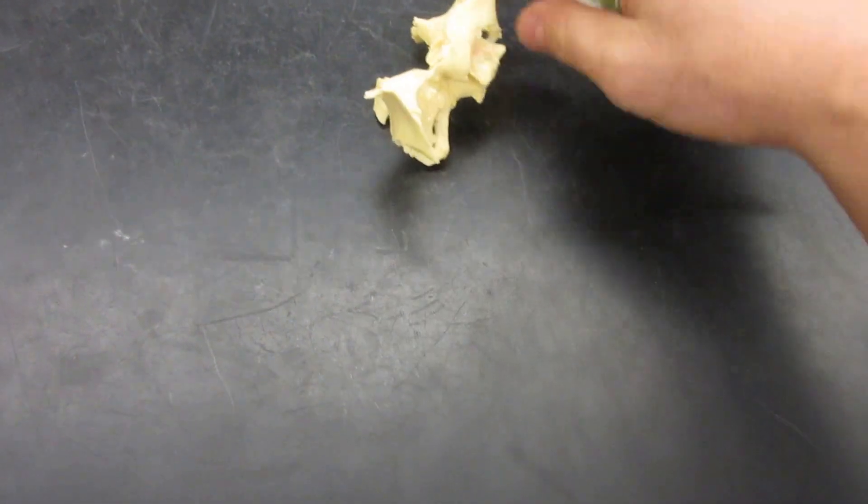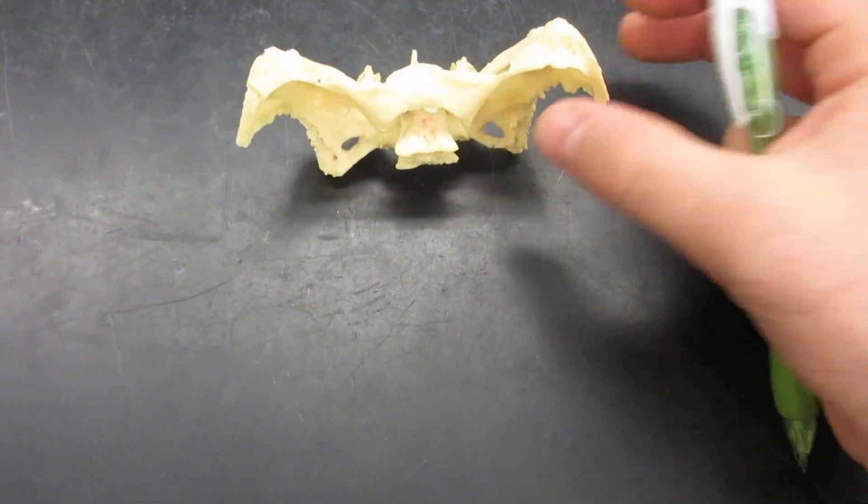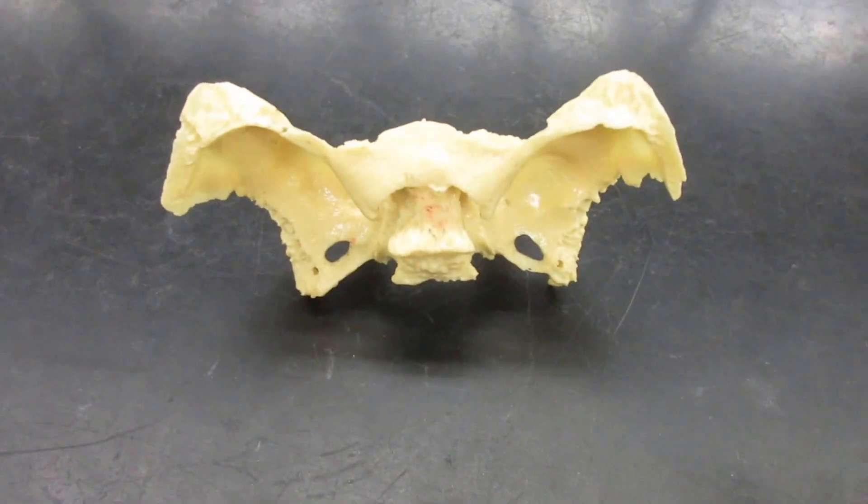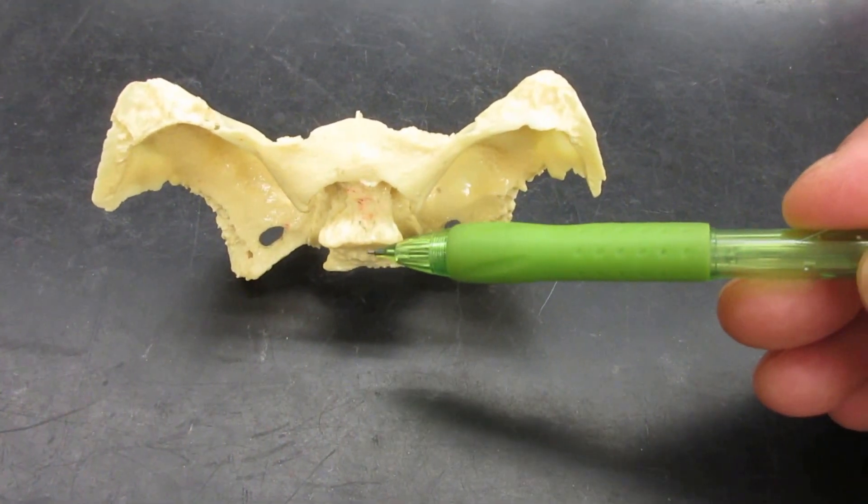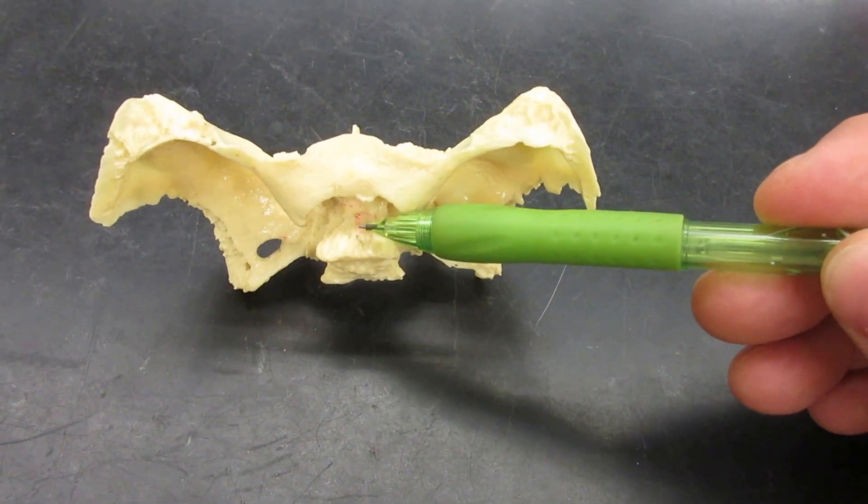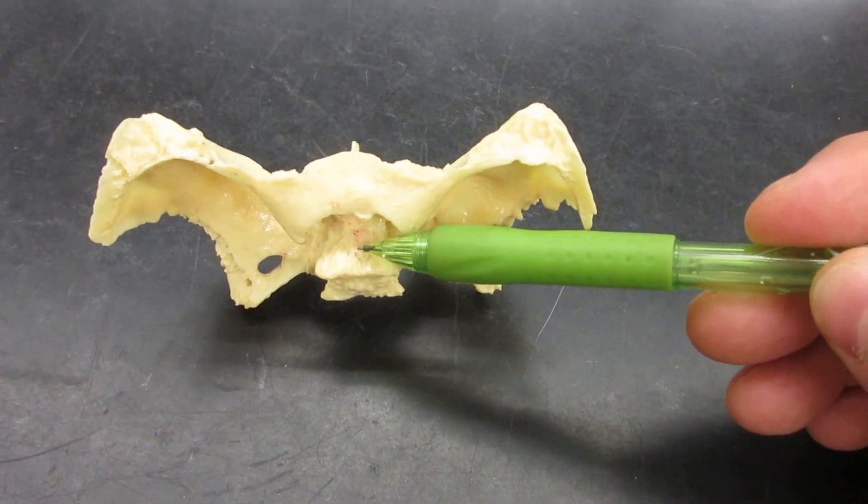Here's the sphenoid bone. With the sphenoid bone, you can look at it from the superior view. When you take the top of the skull off, you can see this. This is the body of the sphenoid. This is the sella turcica, where the pituitary gland sits in.